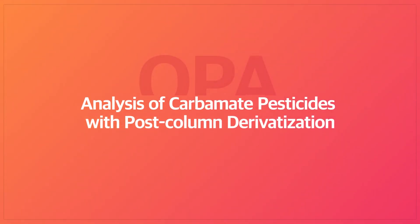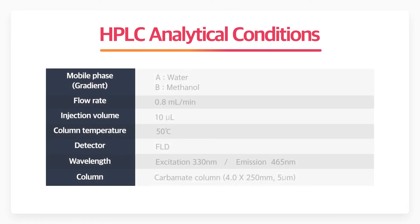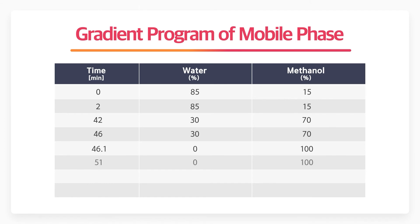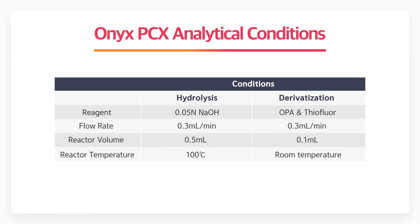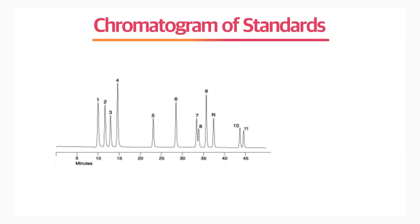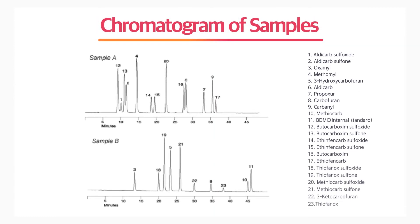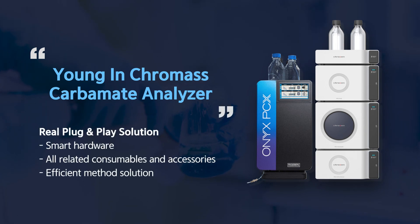Let's look into the analysis of carbamate pesticides with post-column derivatization. We set the methods for HPLC and ONIX PCX as the following conditions. The chromatogram shows reliable results for carbamate analysis. Young Inchromass carbamate analyzer provides a real plug-and-play solution from the smart hardware platform to all related consumables with an efficient method.